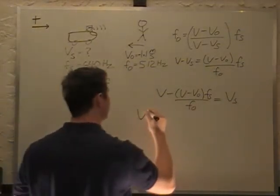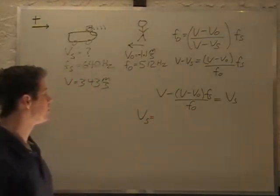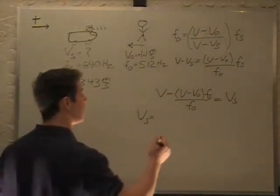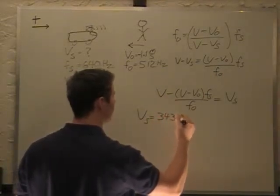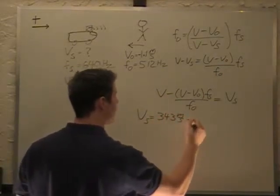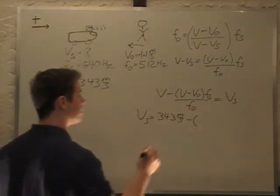All we've got to do now is plug in our known values. We have V equals 343 meters per second, minus V equals 343 meters per second